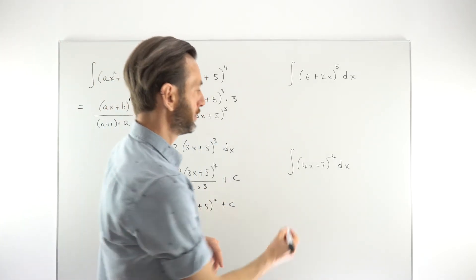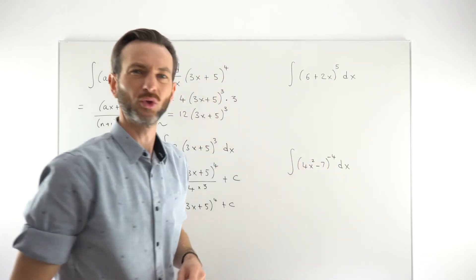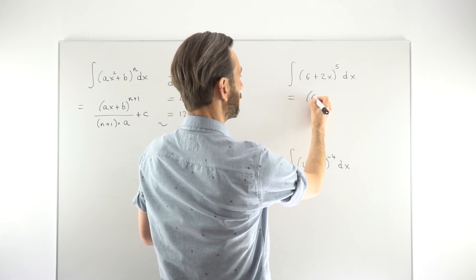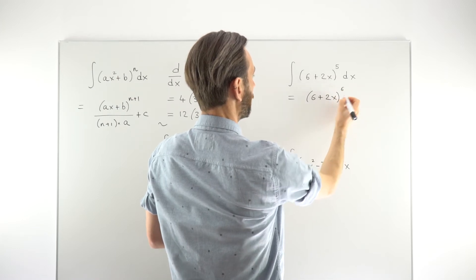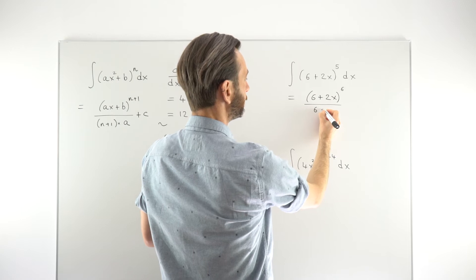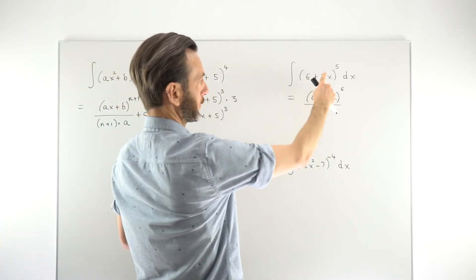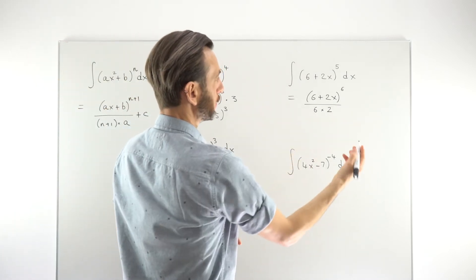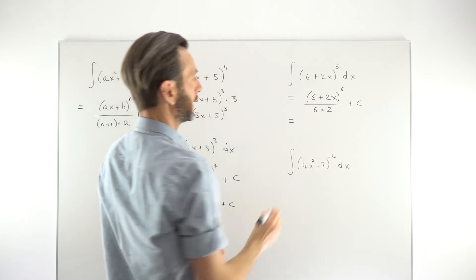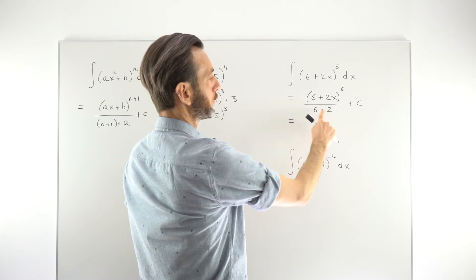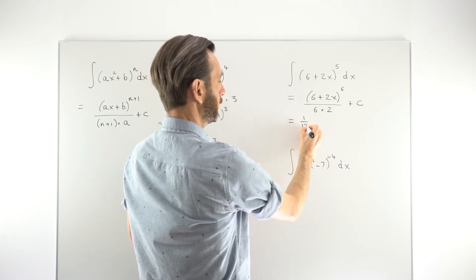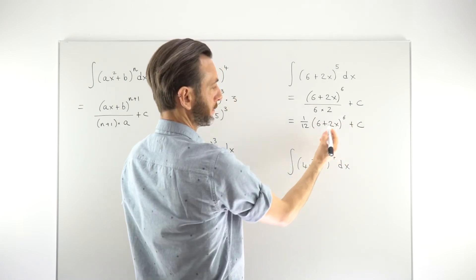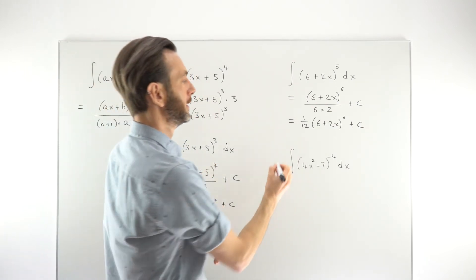Let's mix it up with x squared in the expression. Applying the reverse chain rule to (6 + 2x)⁵: we increase the power by 1 to get power 6, divide by the new power 6, then divide by the derivative of the inside. The derivative of (6 + 2x) is 2, so we put that 2 on the bottom, multiply it into the denominator. Adding plus c and tidying up gives us 6 × 2 = 12, so the answer is (1/12)(6 + 2x)⁶ + c, or equivalently (6 + 2x)⁶ over 12 + c.